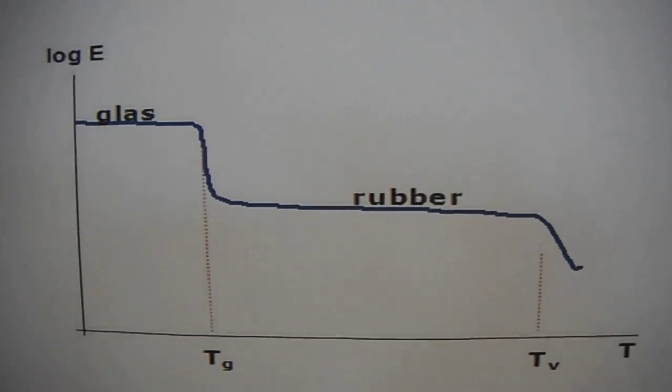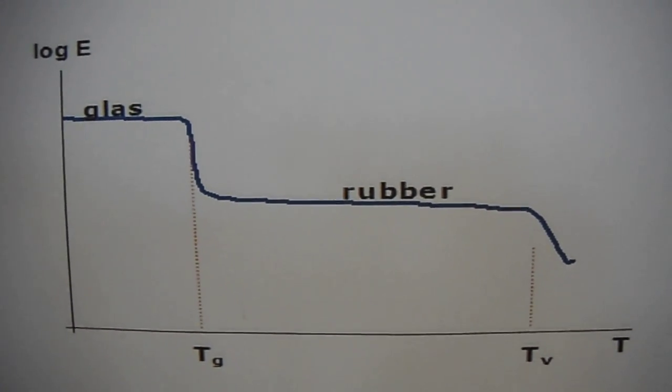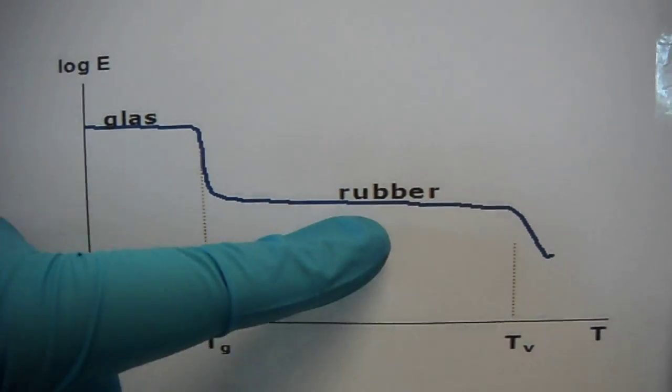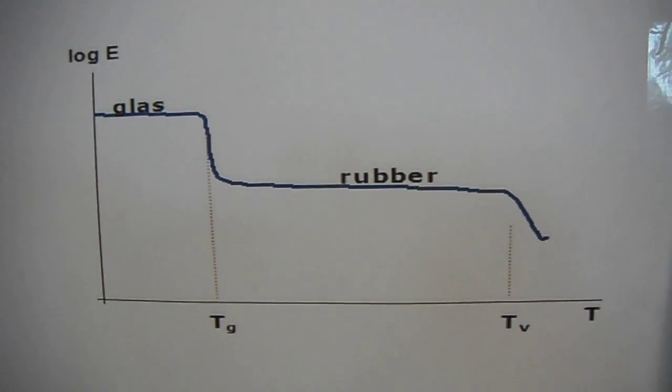To explain this, we'll be using the following curve. A polymer has three states: the glass state, the rubber state, and the liquid phase.